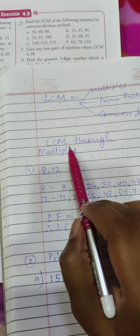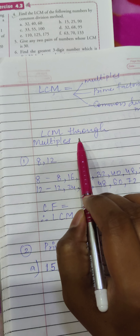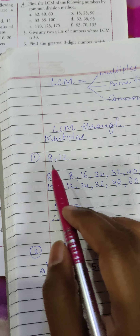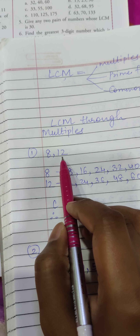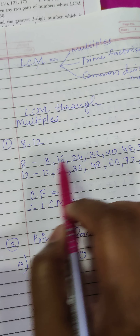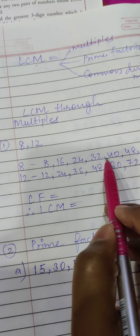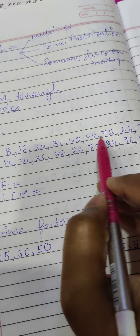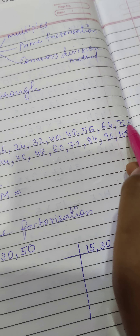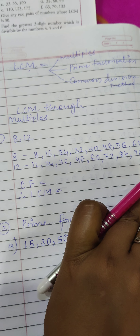Let's start. If we have to find LCM through multiples, it's very easy — you need to remember your tables. I have taken example numbers 8 and 12. The multiples of 8 are: 8, 16, 24, 32, 40, 48, 56, 64, 72, and 80. In this way you are going to write all the multiples of 8.